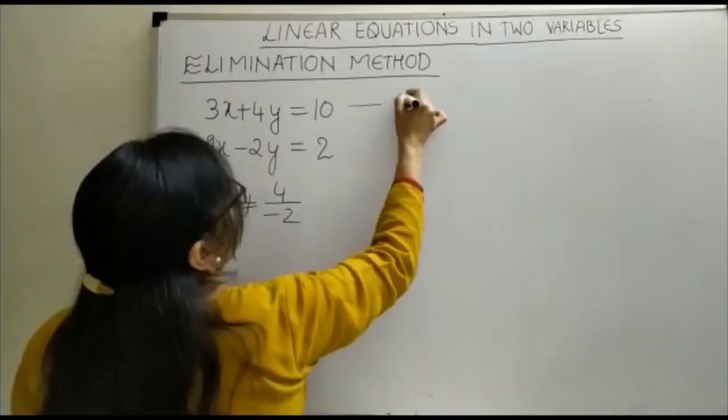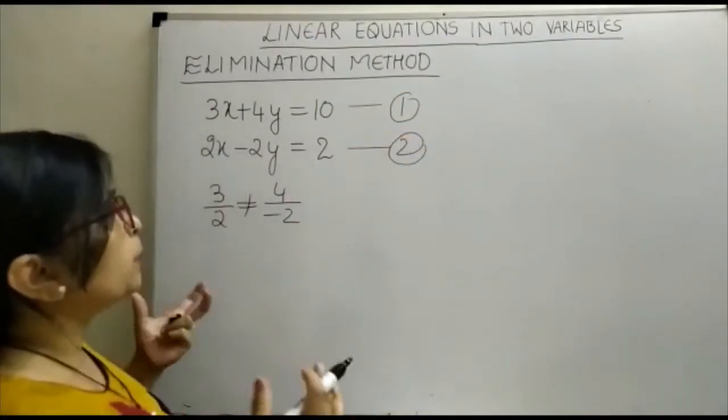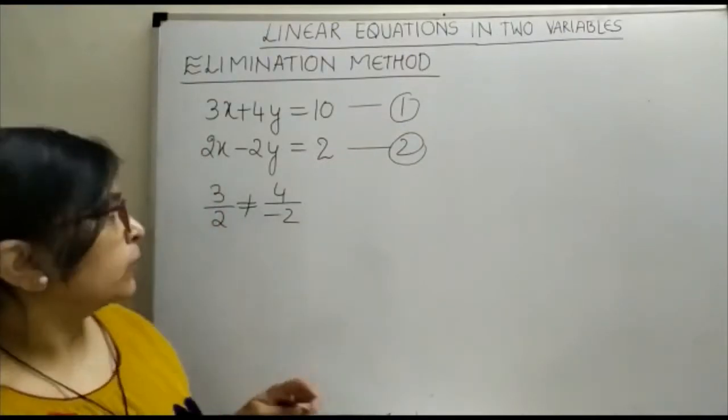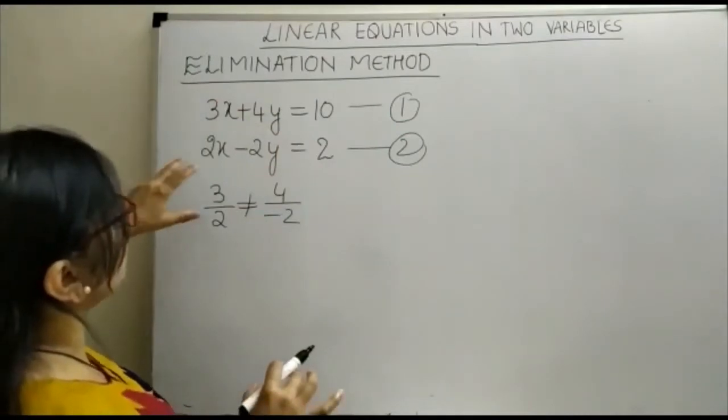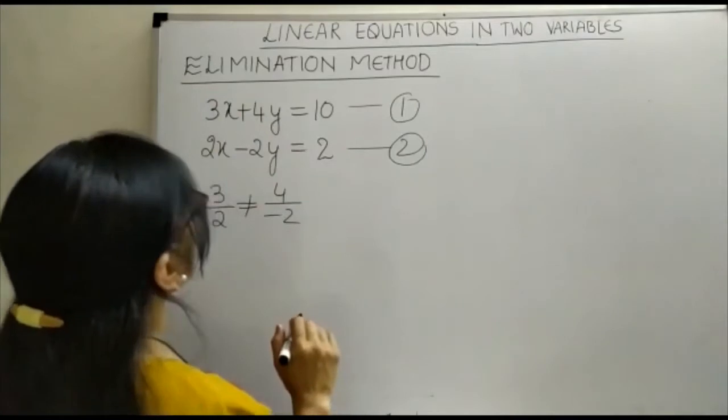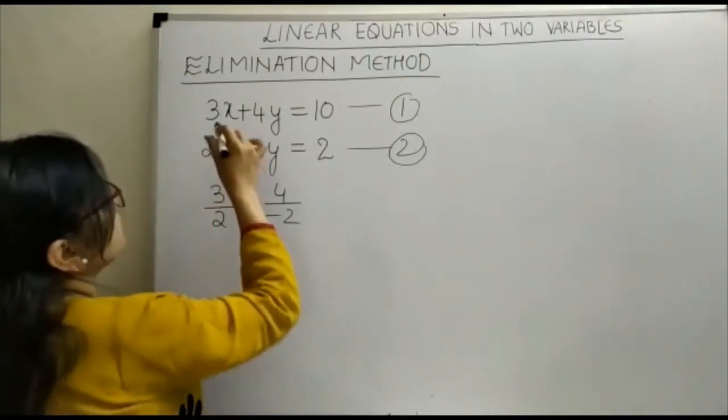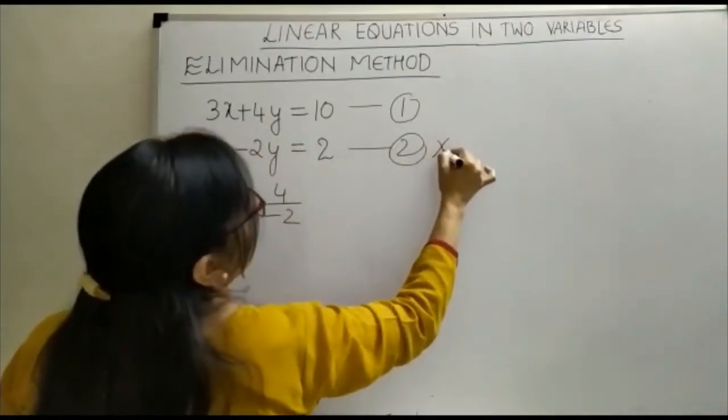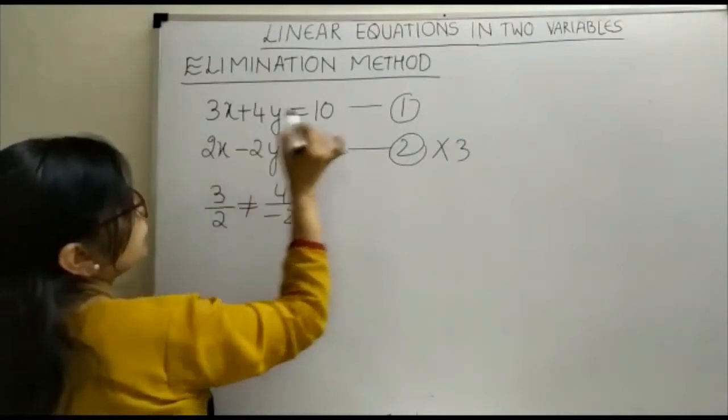This is equation number 1 and this is equation number 2. It is up to us which variable we want to eliminate. Like here, it is 3x plus 4y is equal to 10, 2x minus 2y is equal to 2. Just see here, I am going to eliminate this variable of x. The coefficient of x is 3, so multiply this equation by 3. And here coefficient of variable is 2, and multiply equation 1 by 2.